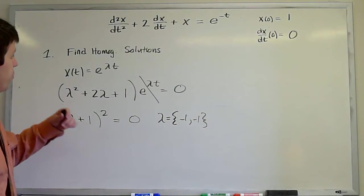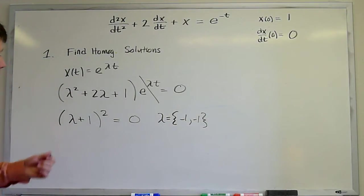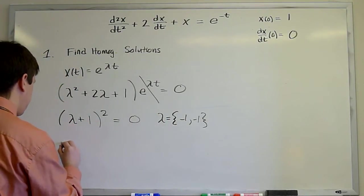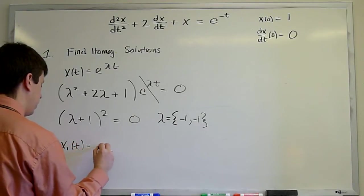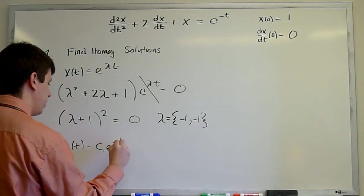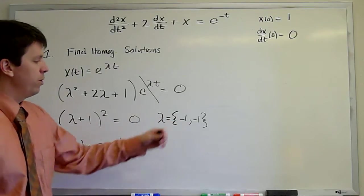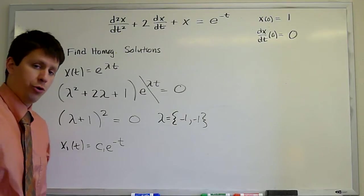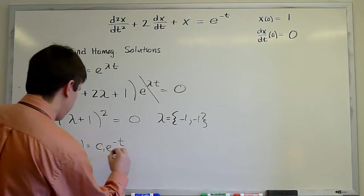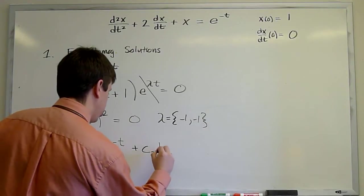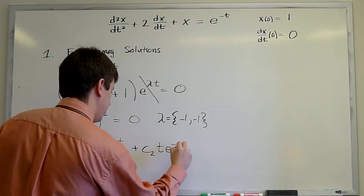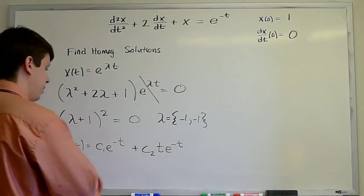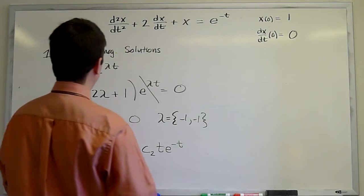As we know from the theory of constant coefficient ODEs, one solution is given by this value of lambda. We get one homogeneous solution, c1 e to the minus t. But we only get one value of lambda. And so to find a second solution, we would in principle have to use reduction of order, which would show us that the second homogeneous solution is t e to the minus t. So we have found our homogeneous solutions and the roots of our characteristic equation.